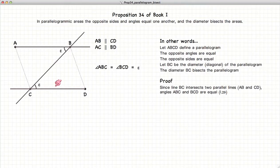First, let's look at the lines AB and CD, which are parallel. According to Proposition 29, the angles ABC and BCD are equal.